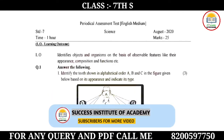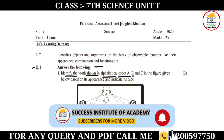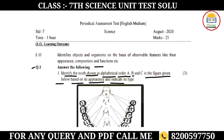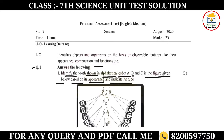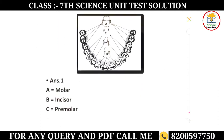Question number one: answer the following. First, identify the teeth shown in alphabetical order A, B, and C in the figure given below based on its appearance and indicate its type. A figure has been provided and you have to identify which type A, B, C each tooth is. As you can see where A is written, in the A parts, you have incisors.